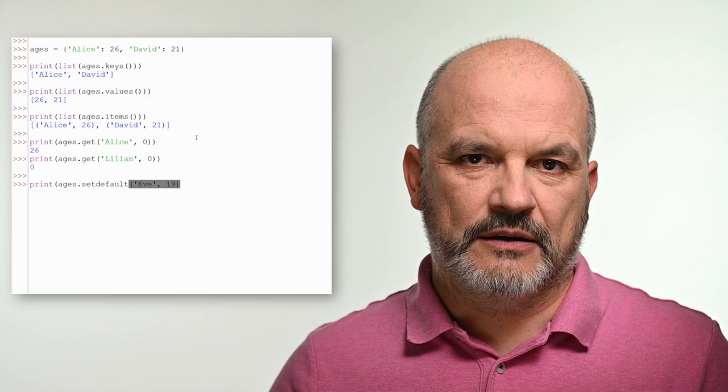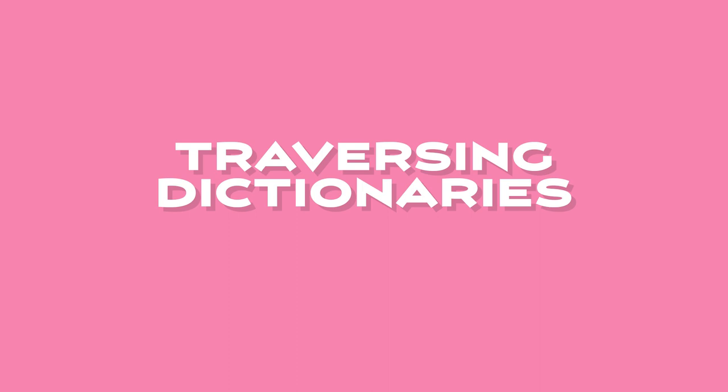However, calling the get method with the argument Lilian returns 0 as the key Lilian is not in the dictionary. setdefault sets the value of a given key if it does not exist, or returns its current value. Calling the method with the argument Eve and 19 sets Eve's age to 19 if she is not in the dictionary, or gets her current age if she is — in our example, Eve will be set with the value 19. The update method updates the dictionary with another dictionary or an iterable of key-value pairs. For example, we could update our ages dictionary with another dictionary containing more names like Frank and Grace. clear removes all the key-value pairs from the dictionary.